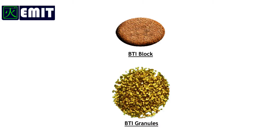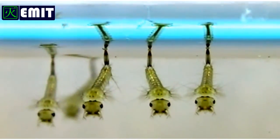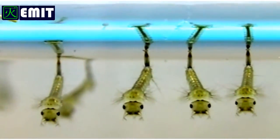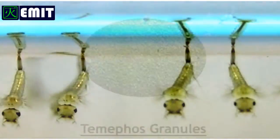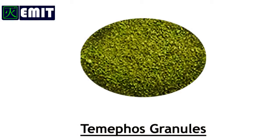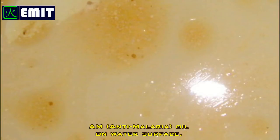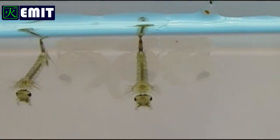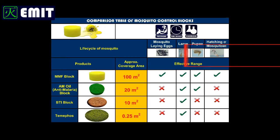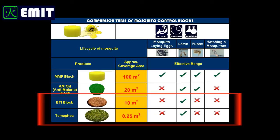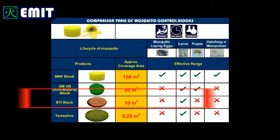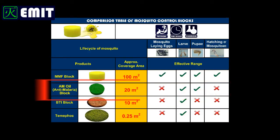BTI is a naturally occurring soil bacterium used for control of mosquito larvae. Mosquito larvae feed on BTI product and the toxin disrupts the gut in the larvae, causing death. Temaphose is an organophosphate used to control mosquito larvae. Oils are lightweight petroleum distillates used to form a coating on top of water to suffocate larvae and pupae. However, BTI and temaphose are only effective against the larvae stage of the mosquito life cycle. Oils are effective for two stages — larvae and pupae — but still ineffective against emerging adults or egg-laying mosquitoes.